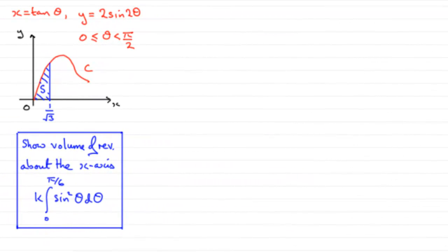Now for this next part, what we've got is this curve here, C, which is given by the parametric equations x equals tan theta and y equals 2 sine 2 theta, for theta between 0 and pi upon 2.